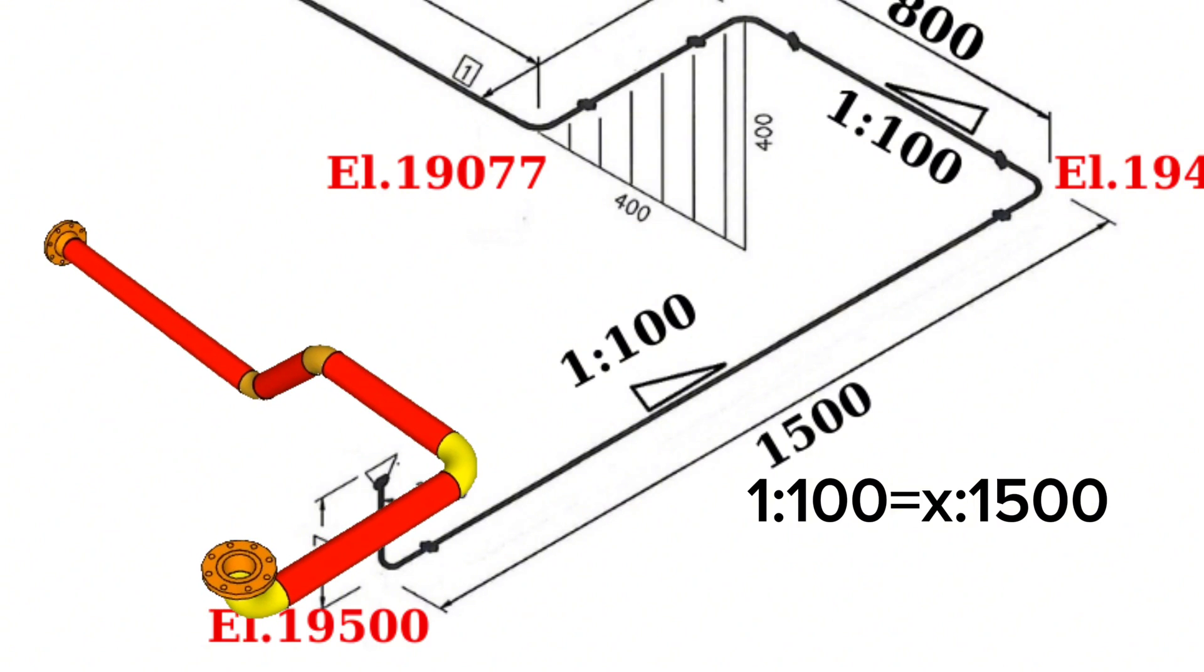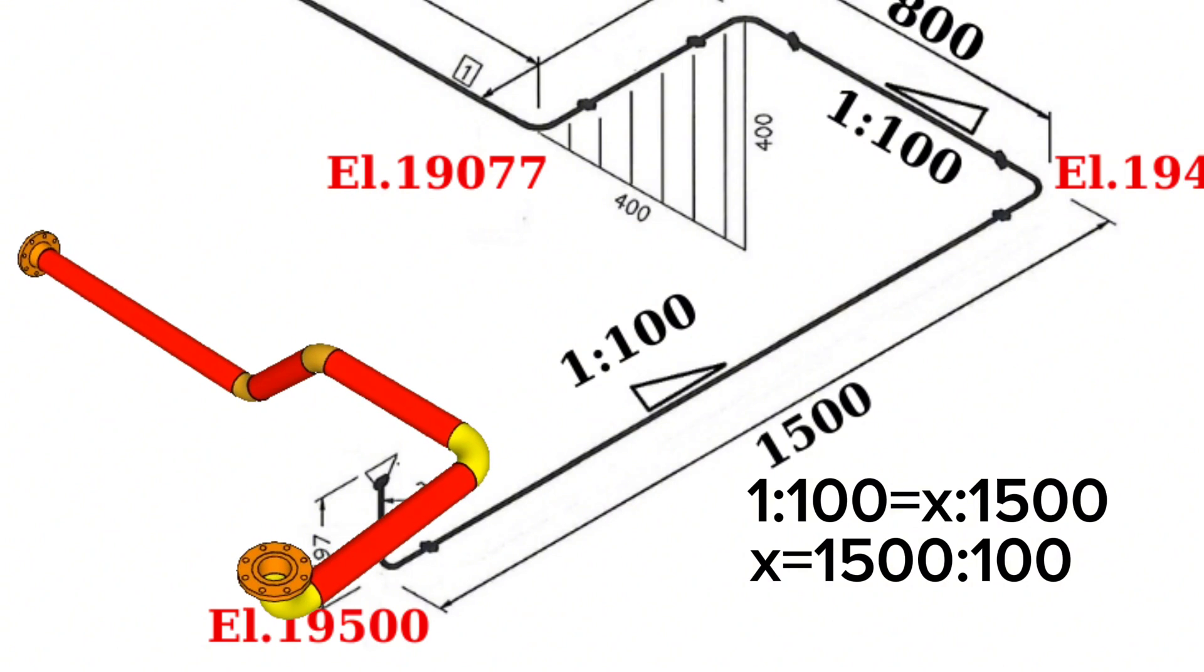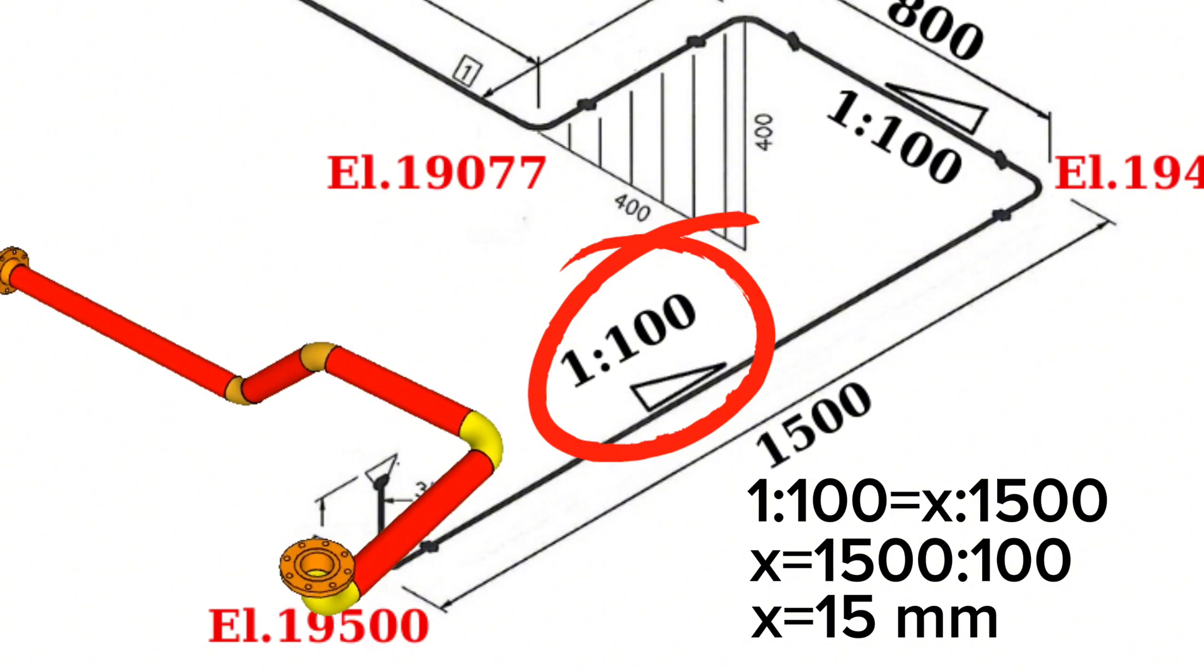Continue. x equals 1500 to 100 ratio. Continue the calculation and found x equals 15 millimeters. This means that the 1,500 millimeter long pipeline falls 15 millimeters down at the other end with a slope of 1 to 100 ratio.